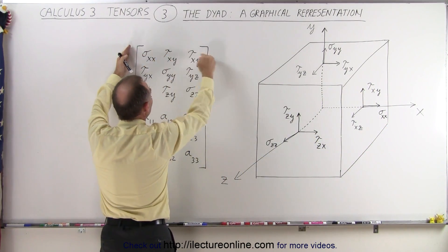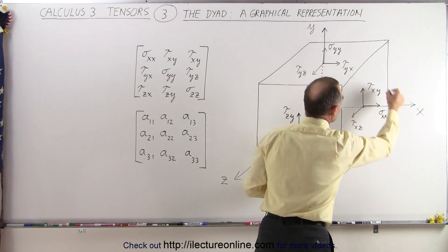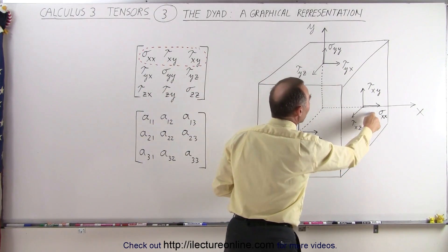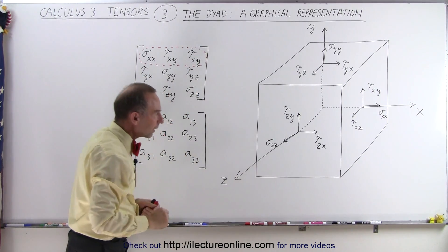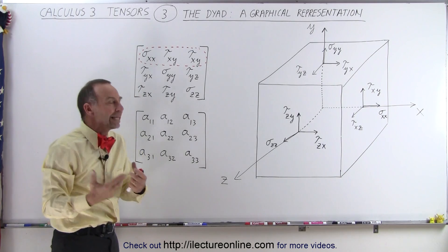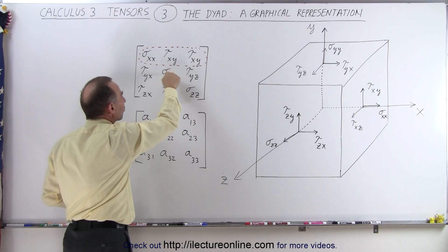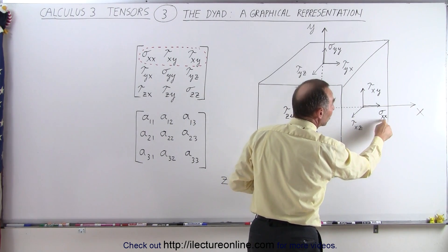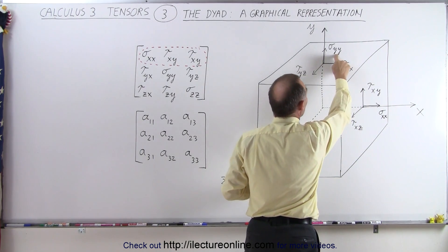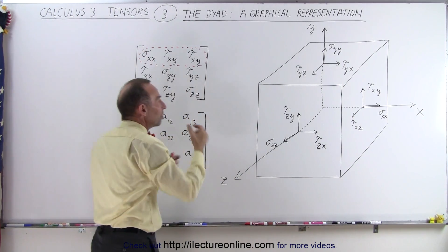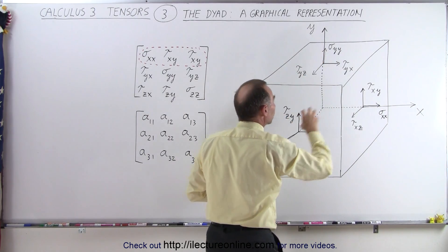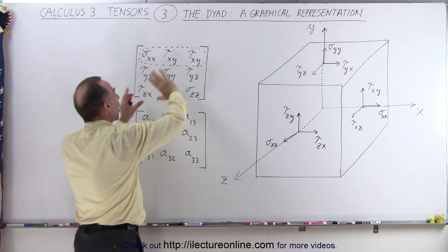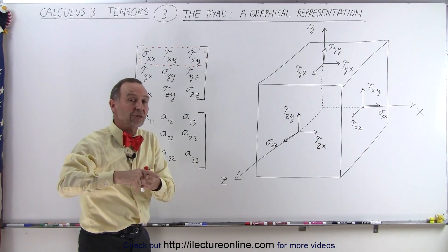If we go to our matrix that has nine components, the x-direction is represented by a set of vector components that point in the x, y, or z direction. We use sigma and tau notation — sigma along the diagonal, because all the sigma components point in the same direction as the axes they're on. For example, sigma xx means we're on the x-direction and it's pointing in the x-direction. Sigma yy is y-direction pointing in y, sigma zz is z-direction pointing in z. The diagonal elements represent components that point in the same direction as their axis, while all off-diagonal components point in a different direction.